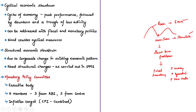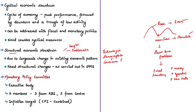Structural economic slowdown is more complex and problematic. It is a deep-rooted phenomenon occurring due to large-scale changes in existing economic patterns, like introduction of disruptive technologies, changing demographics, or changes in consumer behavior. In this case, monetary or fiscal stimulus will not be enough to revive the economy; fixing such problems requires the government to undertake structural policies. One good example is the 1991 reforms where the liberalization of the Indian economy took place.